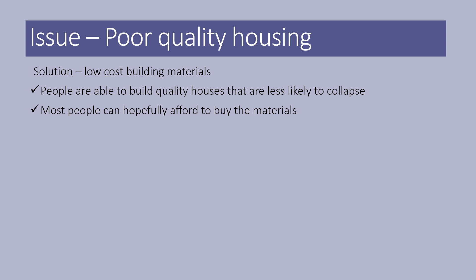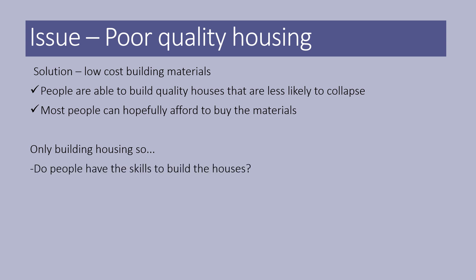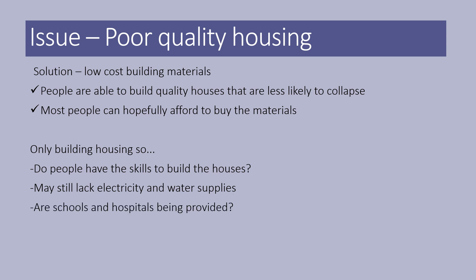Notice the language I am using — not 'they will' or 'they can', but 'potentially', 'should', 'hopefully'. But remember, a house is just one aspect of quality of life. Think: do people have the skills to build those houses? Do those houses have electricity and water supply? Remember, slums, shanty towns, and favelas are generally illegal, so governments aren't obliged to provide those services. The solution appears to be just materials, not water or electricity. Are schools and hospitals being provided? Are jobs being provided? Similar reasons why they might not be.